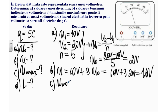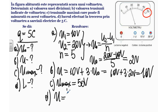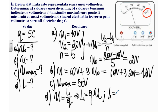Valoarea maximă a tensiunii o luăm de pe scara voltmetrului. Presupunem că voltmetrul este conectat la borna 0 și borna 50, deci tensiunea maximă este egală cu 50 volt. Din formula tensiunii, lucrul este egal cu sarcina înmulțită cu tensiunea. Substituind valorile numerice, lucrul este egal cu 5 coulombi înmulțit cu 16 volt, rezultatul este 80 joule.